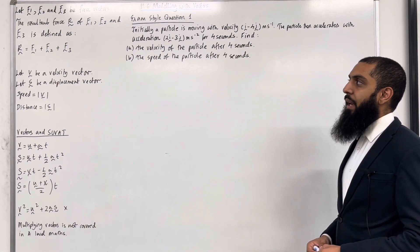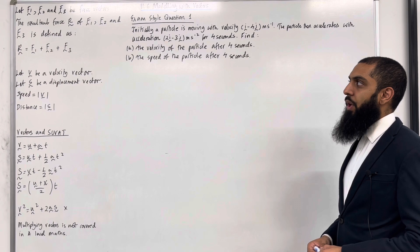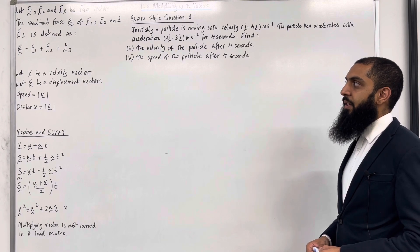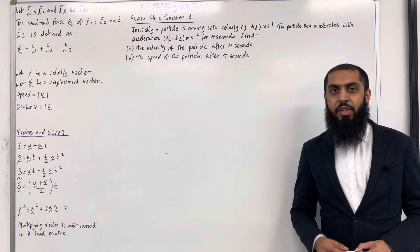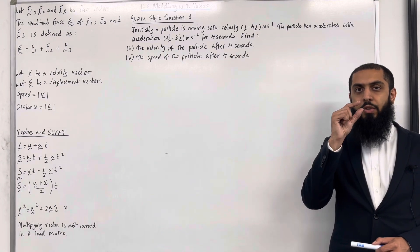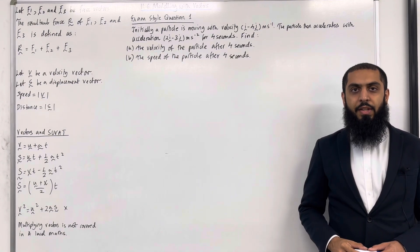Let F1, F2 and F3 be force vectors. The resultant force R of F1, F2 and F3 is defined as R equal F1 plus F2 plus F3. So essentially, the resultant force is the sum of the individual forces.